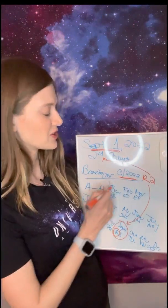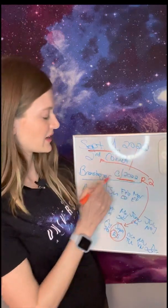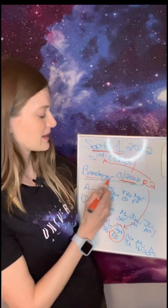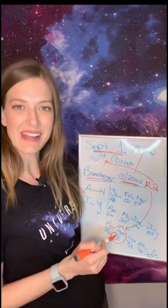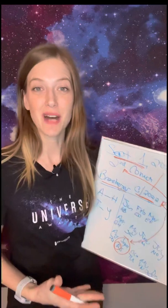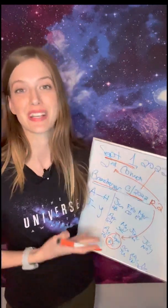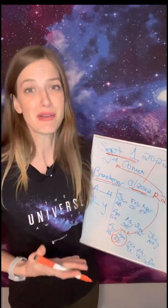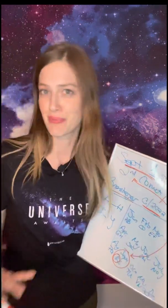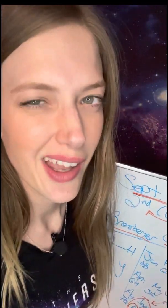So the full name would be: Brentsburger C/2022 R2. That would be really cool if I actually discovered a comet on September 1st, 2022 — it means we just predicted or manifested something. The universe might be a lot more predictable than we think.